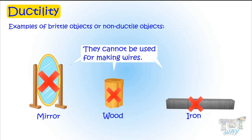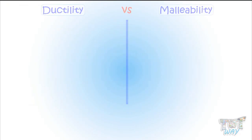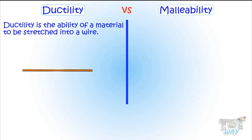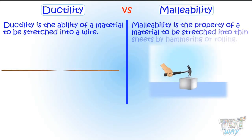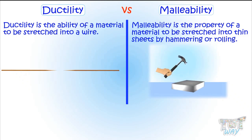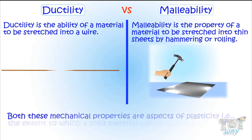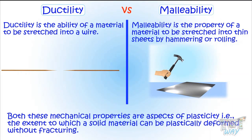Now let's learn some differences between malleability and ductility. Ductility is the ability of a material to be stretched into a wire, and malleability is the property of a material where it can be stretched into thin sheets. Both these mechanical properties are aspects of plasticity — that is, the extent to which a solid material can be plastically deformed without fracture.